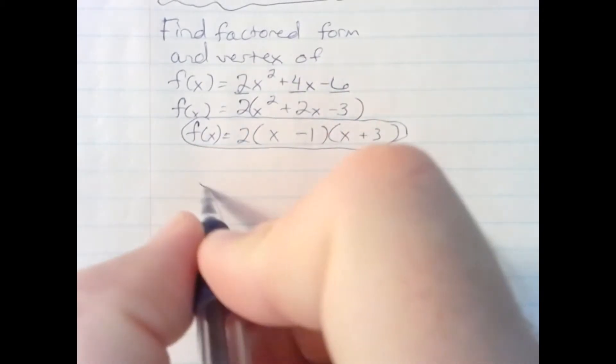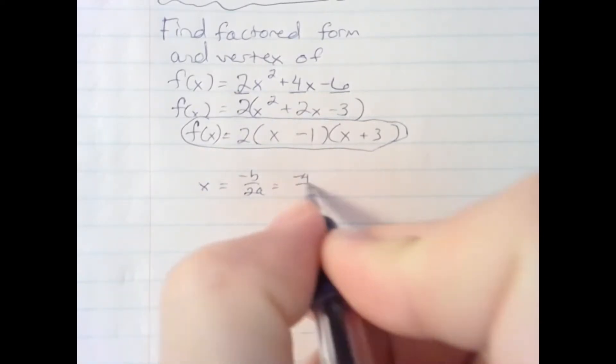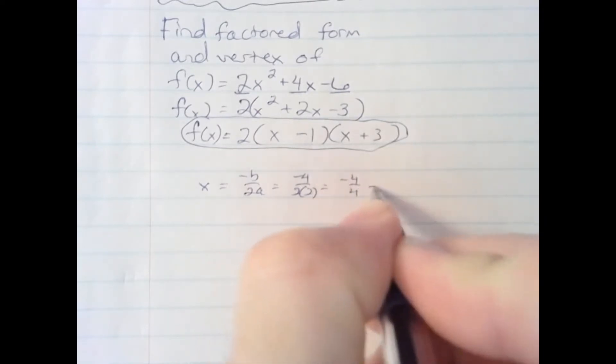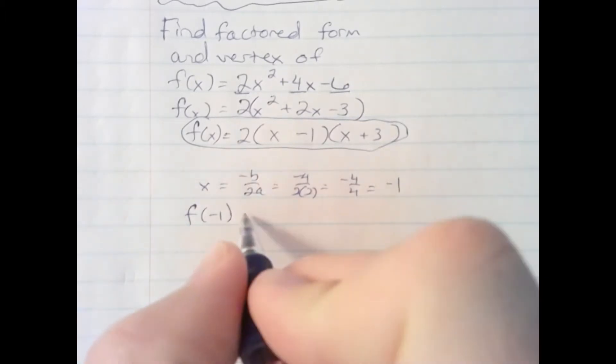The x-coordinate of the vertex is negative b over 2a: negative 4 over 2 times 2, negative 4 over 4, which is negative 1. I need to plug the negative 1 back into the problem.